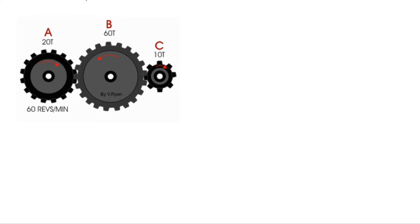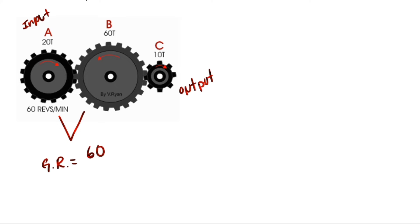On the whiteboard: gear A is the input, gear C is the output. A drives B, which drives C. Notice A and C turn in the same direction because B reverses direction twice. The gear ratio from A to B is output over input: 60 over 20, which is 3 to 1. The gear ratio from B to C is 10 over 60, which is 1/6 to 1.